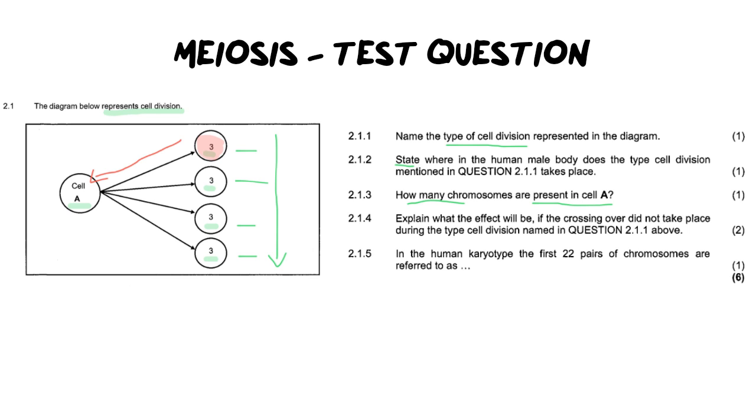If we move on to the next question it says explain. And I want you to know that whenever you see the word explain you have to give a cause and effect answer. It's for two marks. Always look at the mark allocation. It says explain what the effect will be if crossing over did not take place during the type of cellular division mentioned in 2.1.1. Now this is important. Many people will just dive straight in and they say there'll be no genetic variation.